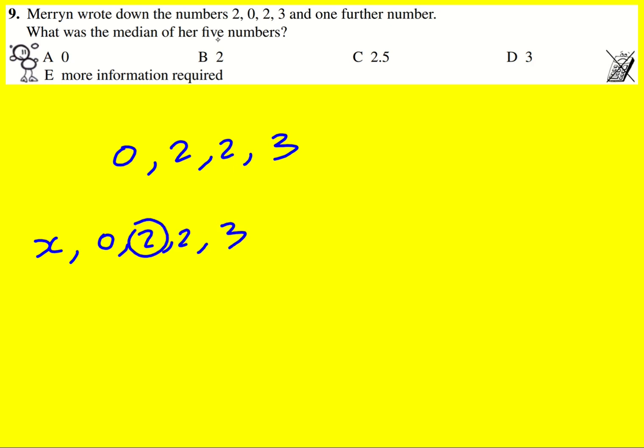Now I might be tempted therefore to put 2 as the answer, but it might be that more information is required, so we can't quite do that yet. What if x is between 0 and 2? Then actually it doesn't affect it, it's still third.